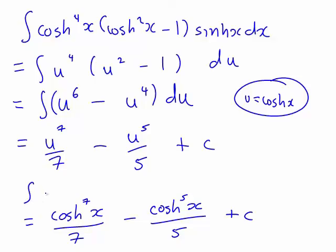Where that was the integral of what we started with, which was cosh⁴(x) times sinh³(x) dx. That's the integral we were working out when we started.